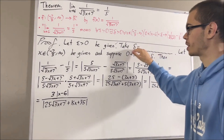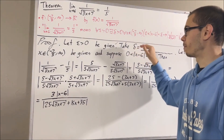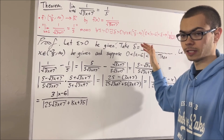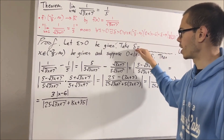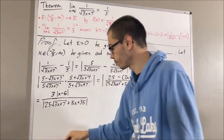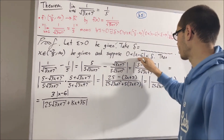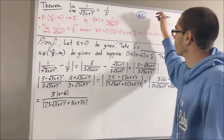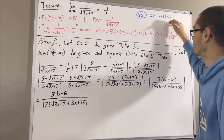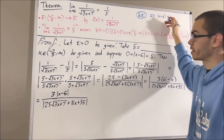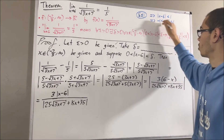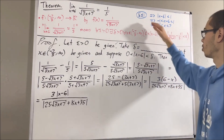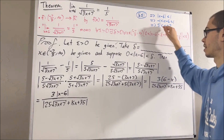Let's start thinking about how we should define delta. A trick we can use is to restrict delta so that delta is less than or equal to a list of positive numbers. If we restrict delta so that delta is less than or equal to 1, then since the absolute value of x minus 6 is less than delta, which is less than or equal to 1, that tells us the absolute value of x minus 6 is less than 1. This is equivalent to saying x minus 6 lies between negative 1 and positive 1, and adding 6 to all three sides, x lies between 5 and 7.